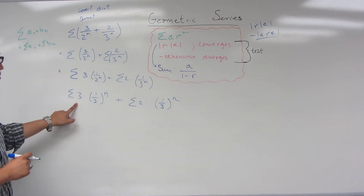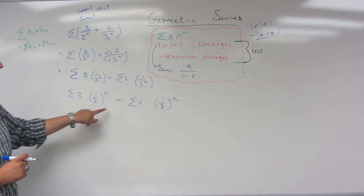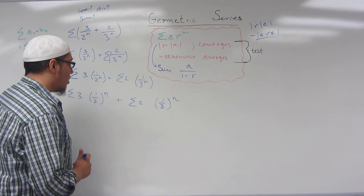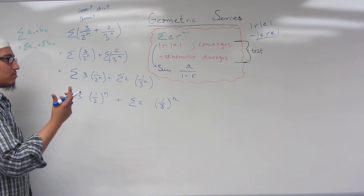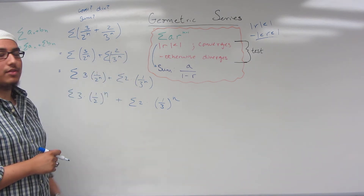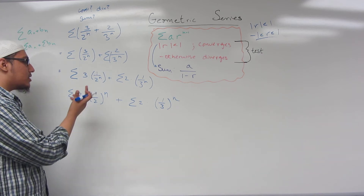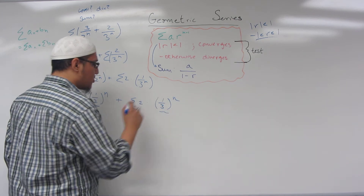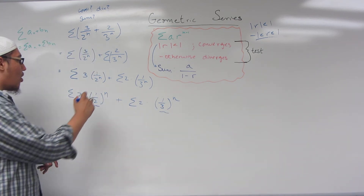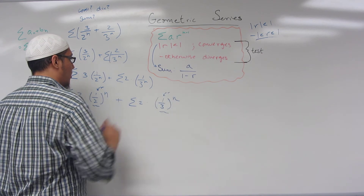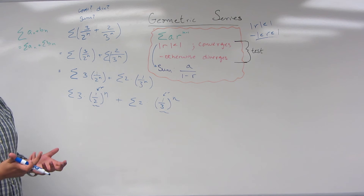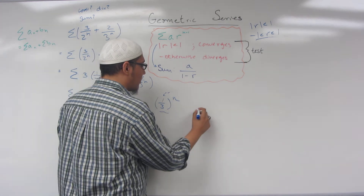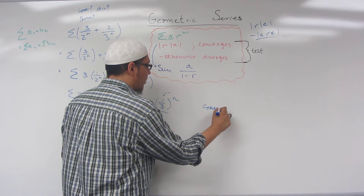In this case, A is 3, R is equal to 1 half, and we are raised to an n power. Same case for the second term. We have concluded this is a geometric series. Now, is R = 1/2 between negative 1 and 1? Is R = 1/3 between negative 1 and 1? Yes — both R terms lie in that interval, and therefore this is a convergent series.